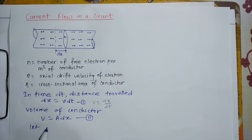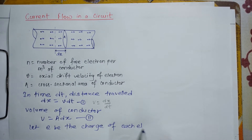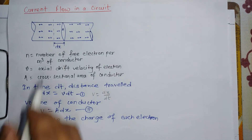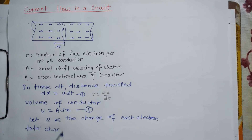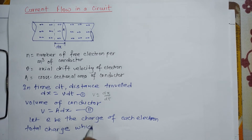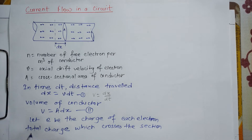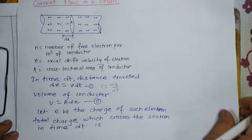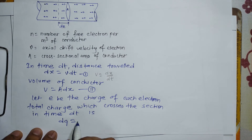Let e be the charge of each electron. Each electron will carry charge e. The total charge which crosses the section in time dt is represented as dQ. This total charge dQ will be equal to the number of electrons times the charge per electron.